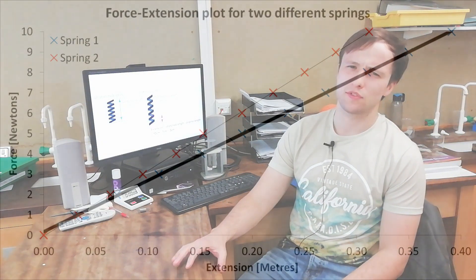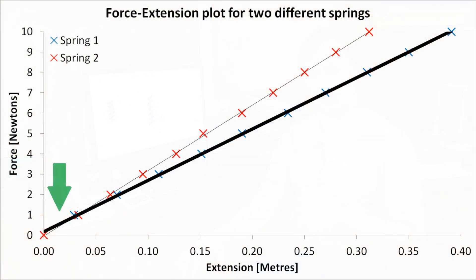But wait, there's more! Something funny is going on towards the bottom of the plot for spring 1. While our line of best fit does show that force is proportional to extension, as expected for a spring, it doesn't even go through the origin.